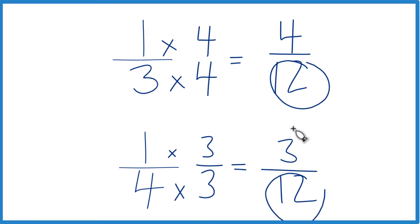Same denominator, we just compare the numerators. And you can see that four is greater than three. So four-twelfths, that's greater than three-twelfths.